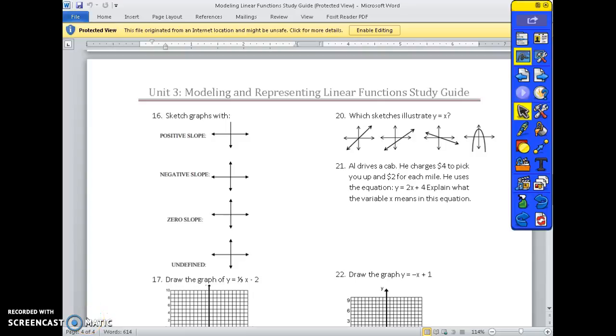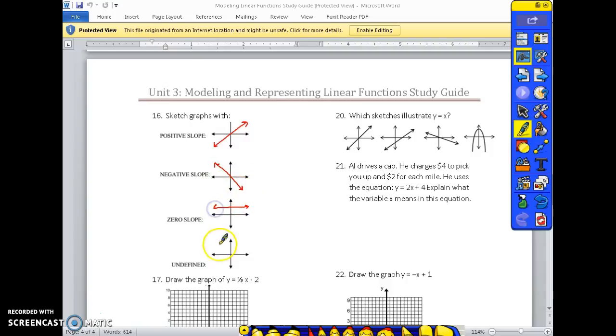Part 2 of Unit 3's study guide review. Number 16, sketch graphs with positive slopes. So you go from the bottom left and up to the right. With a negative slope, you start in the top left and you're going down, so it's downhill. Zero slope is when it's a horizontal line and undefined is when it is a vertical line.